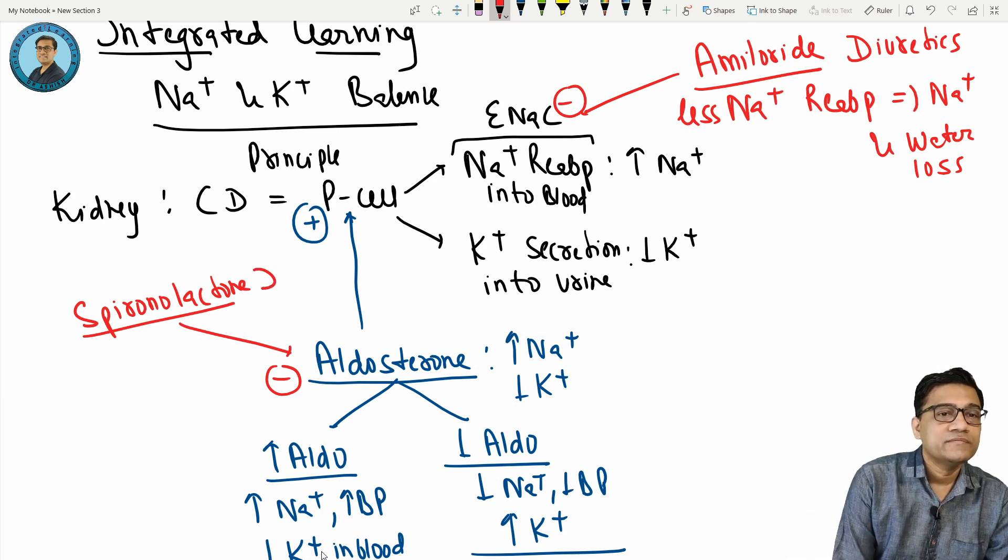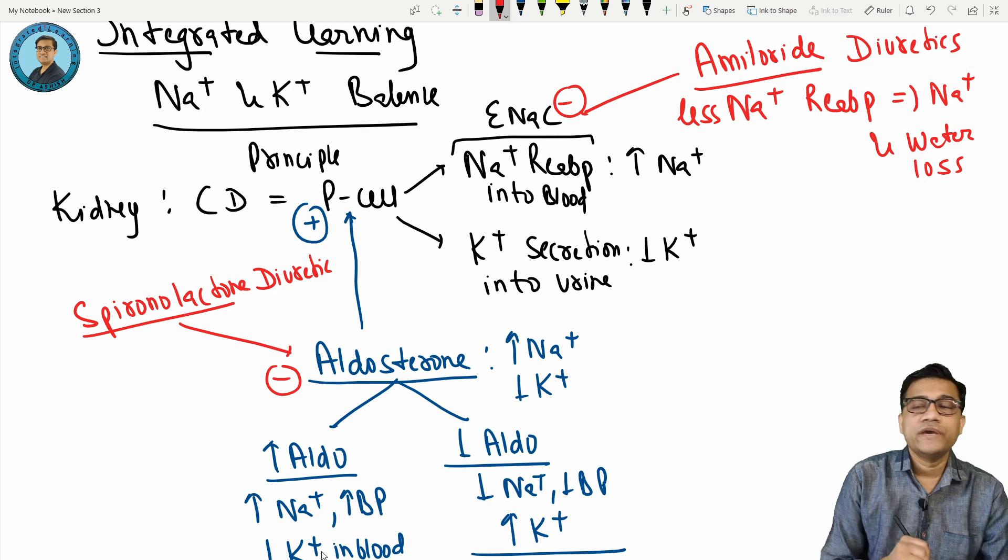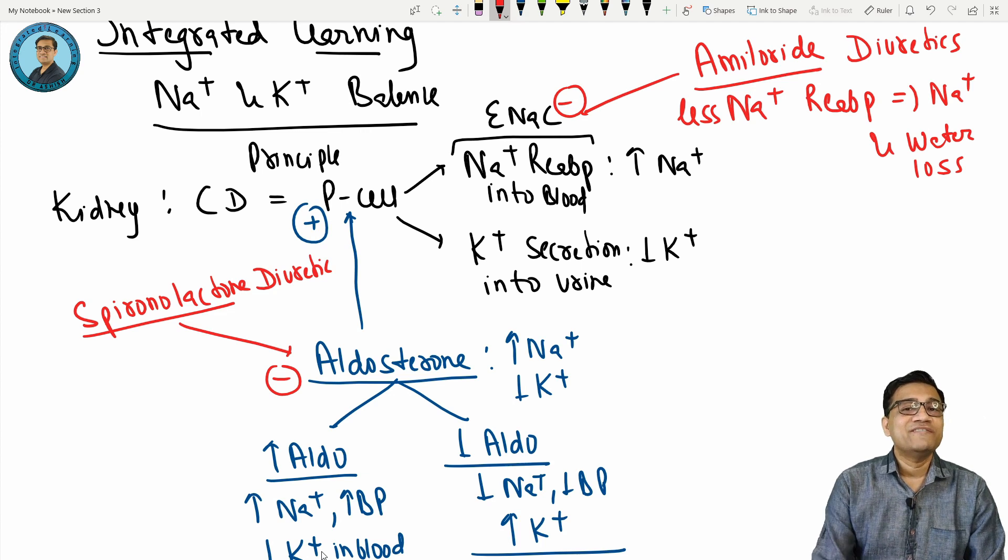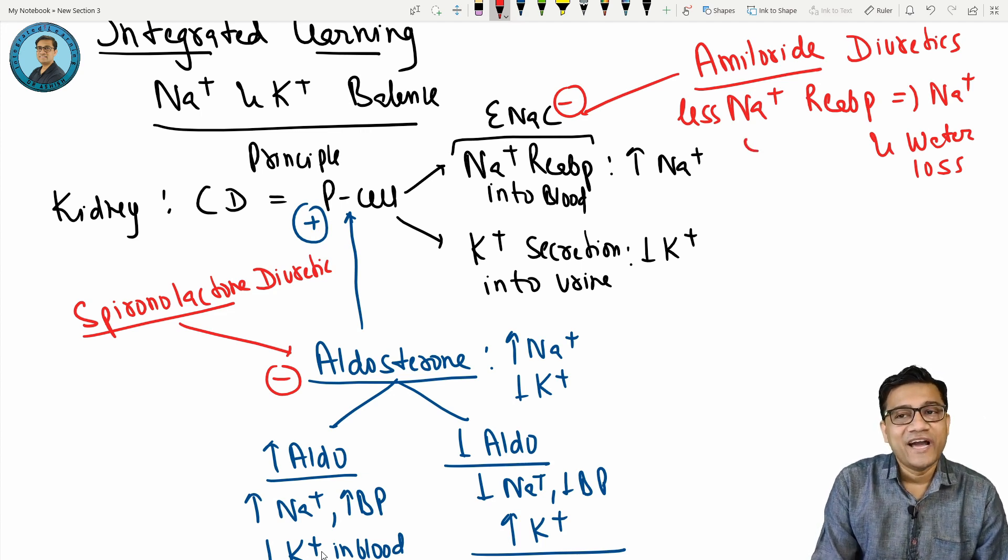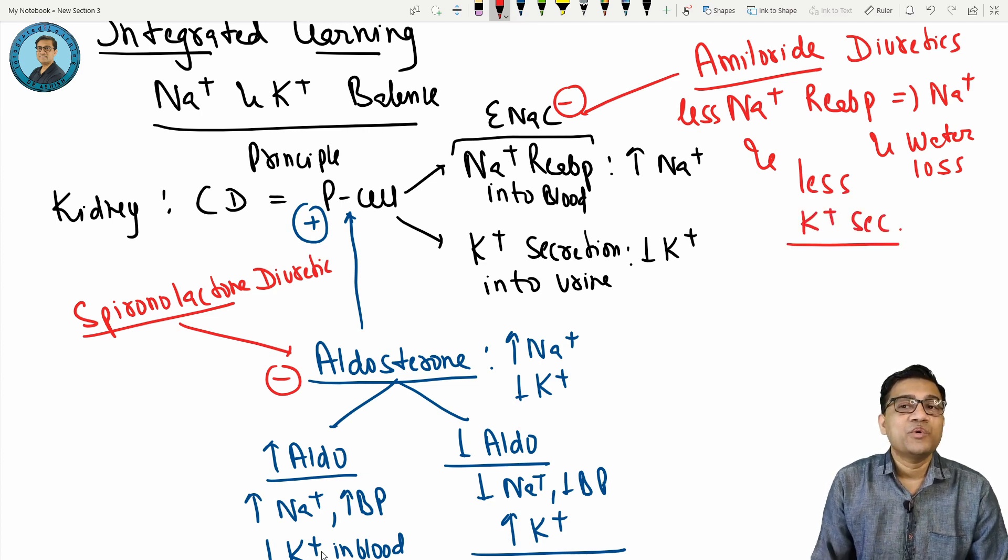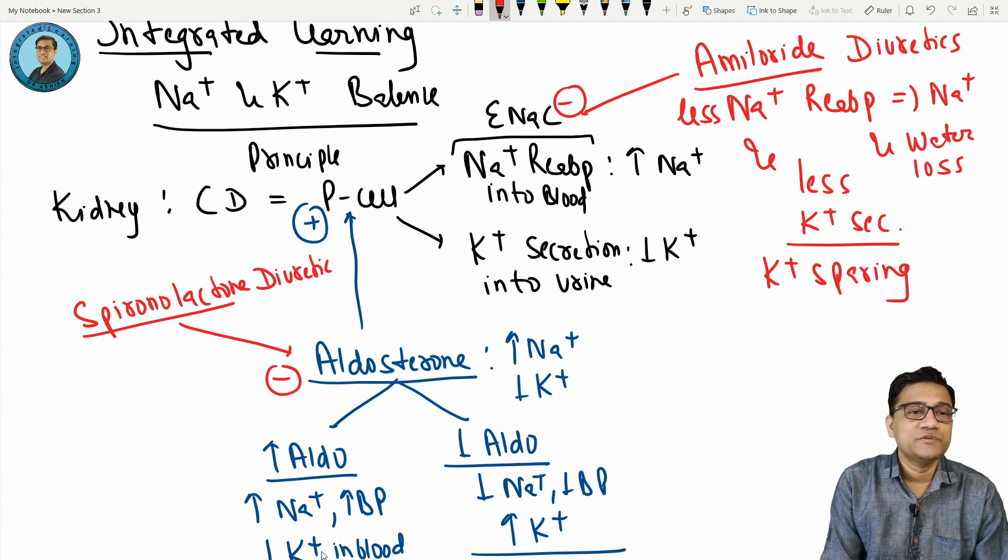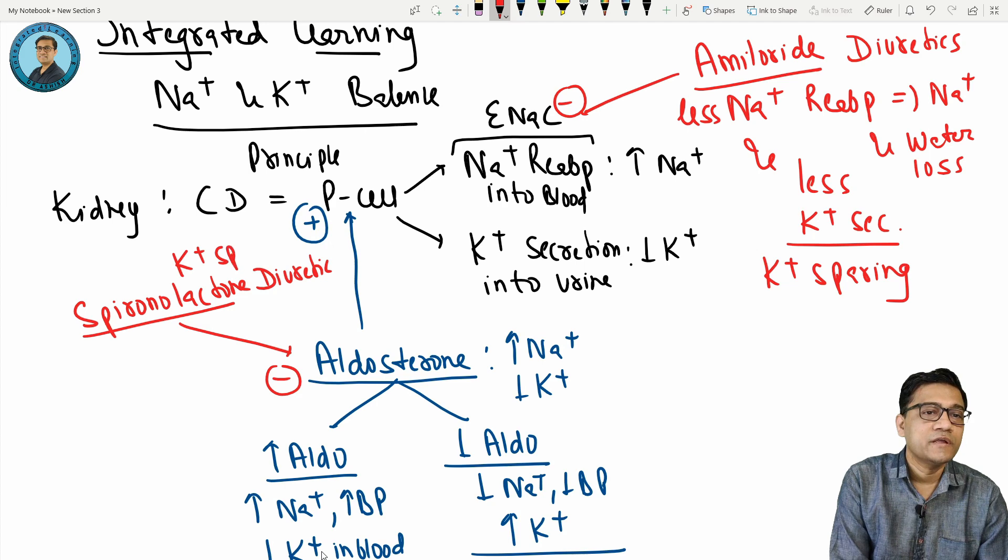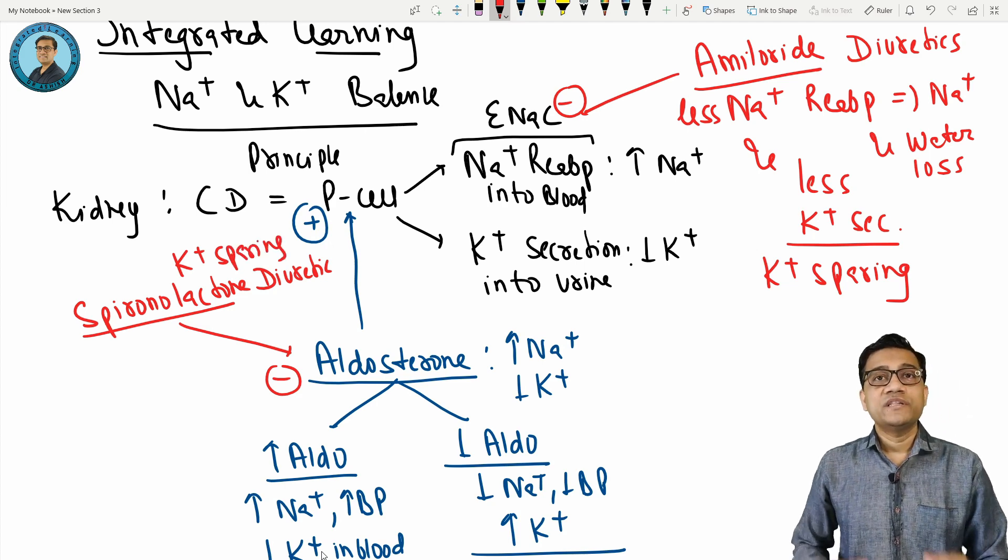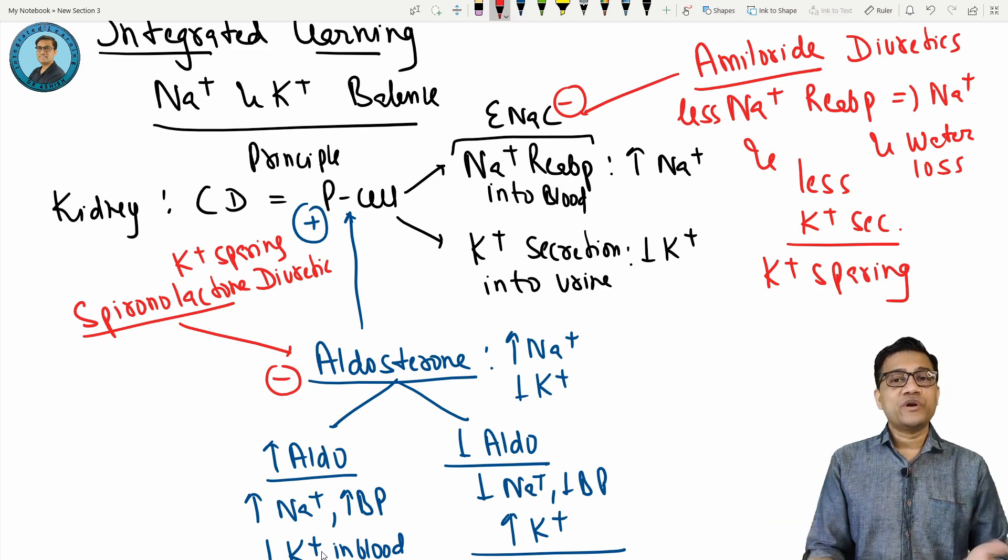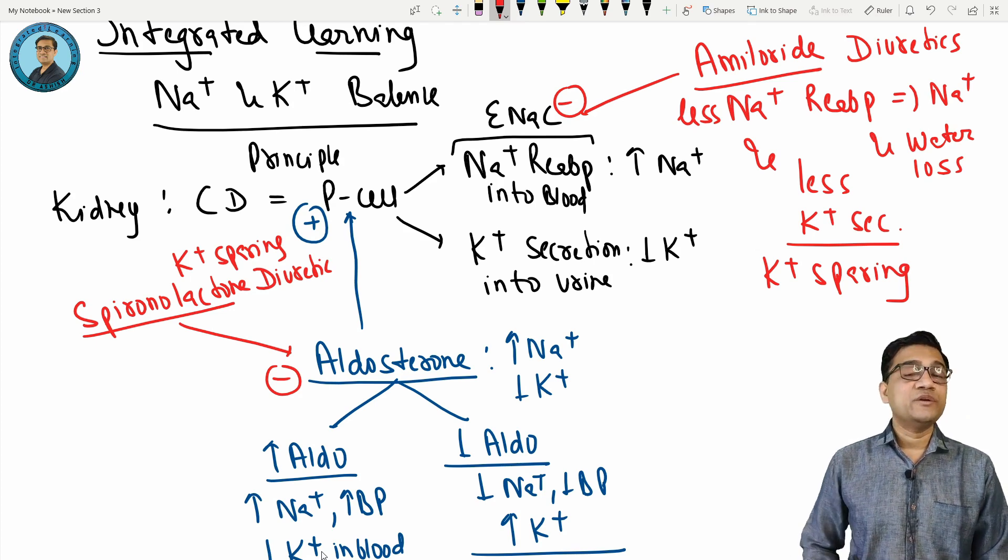But one thing - will they cause potassium secretion? No, they will decrease potassium secretion. That means less potassium secretion in urine. That means potassium is not lost, so potassium loss is prevented. That's why they are called potassium sparing. They will cause less sodium, less water, but they will not cause loss of potassium. Potassium will increase, sodium will decrease.